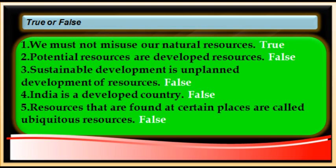Answers: number one is true — we must not misuse natural resources, as some are exhaustible and we should conserve and protect them. Number two is false — potential resources are undeveloped resources; actual resources are the developed ones. Number three is false — sustainable development is well-planned, rational development that keeps in mind the demands of future and present generations.